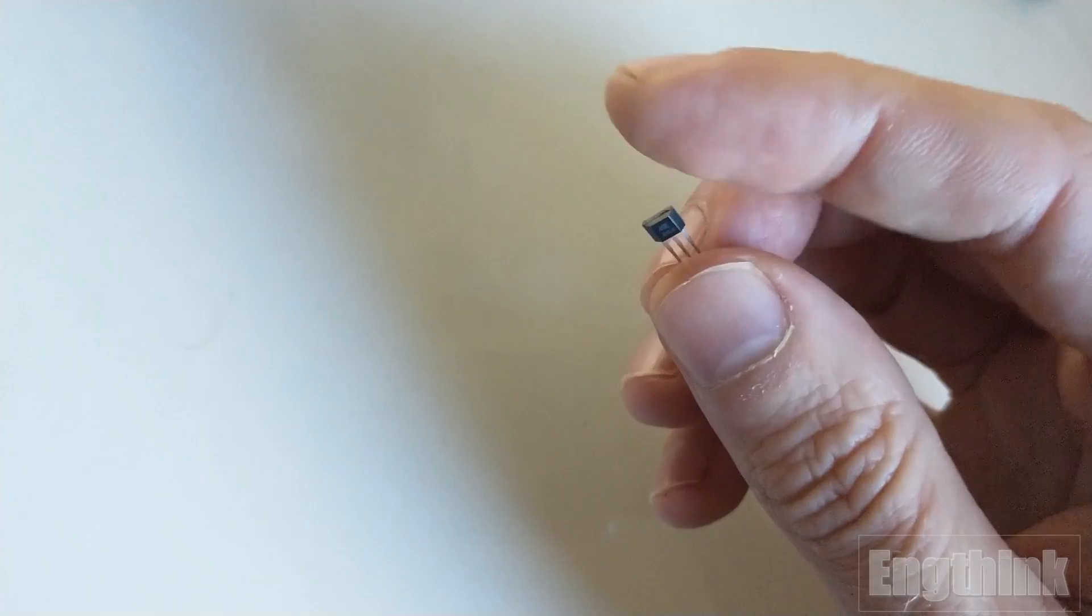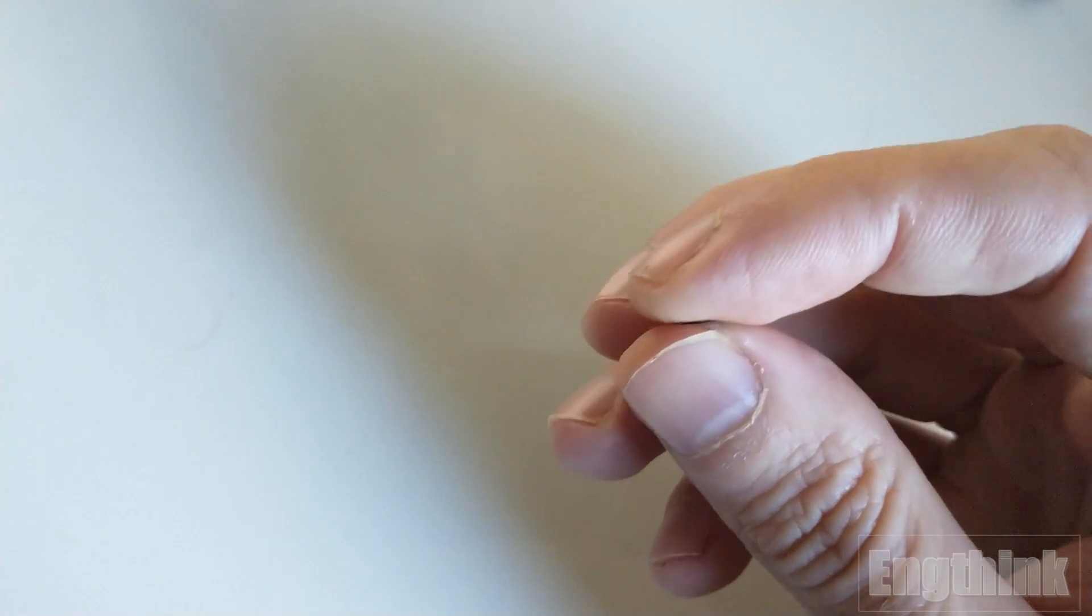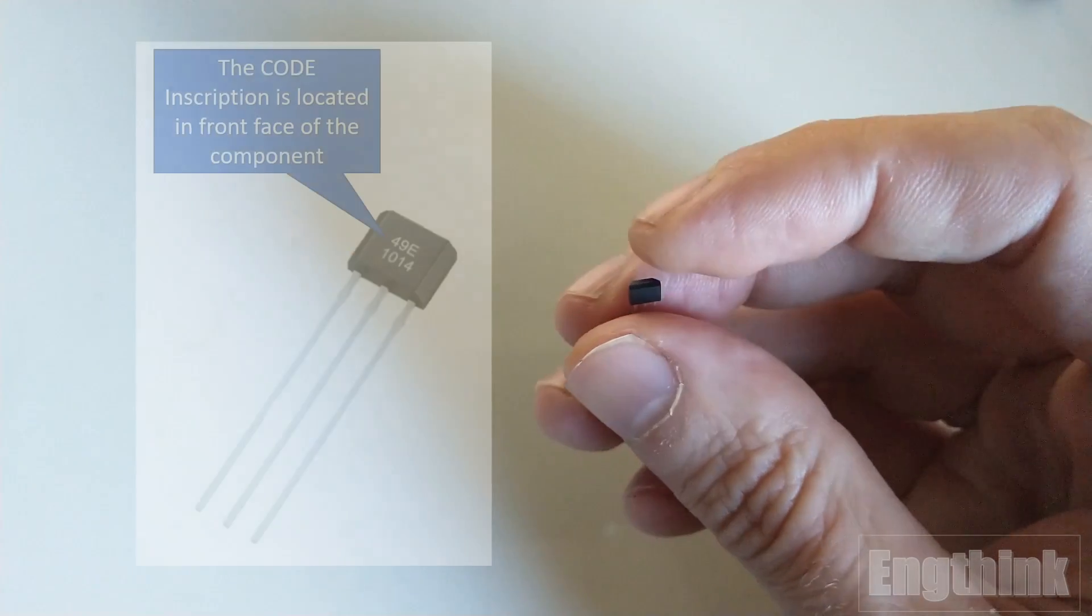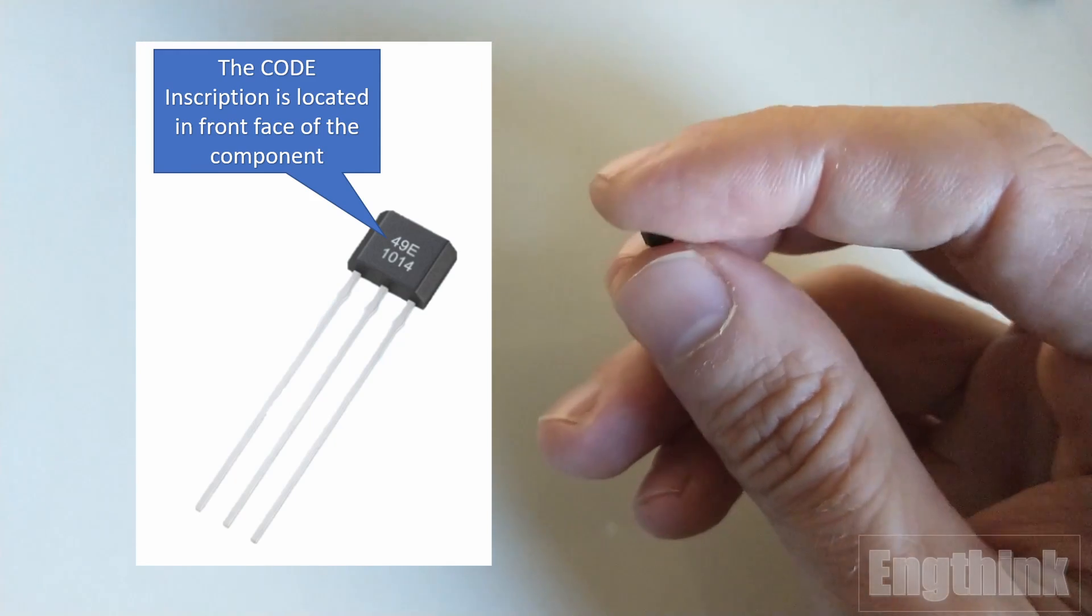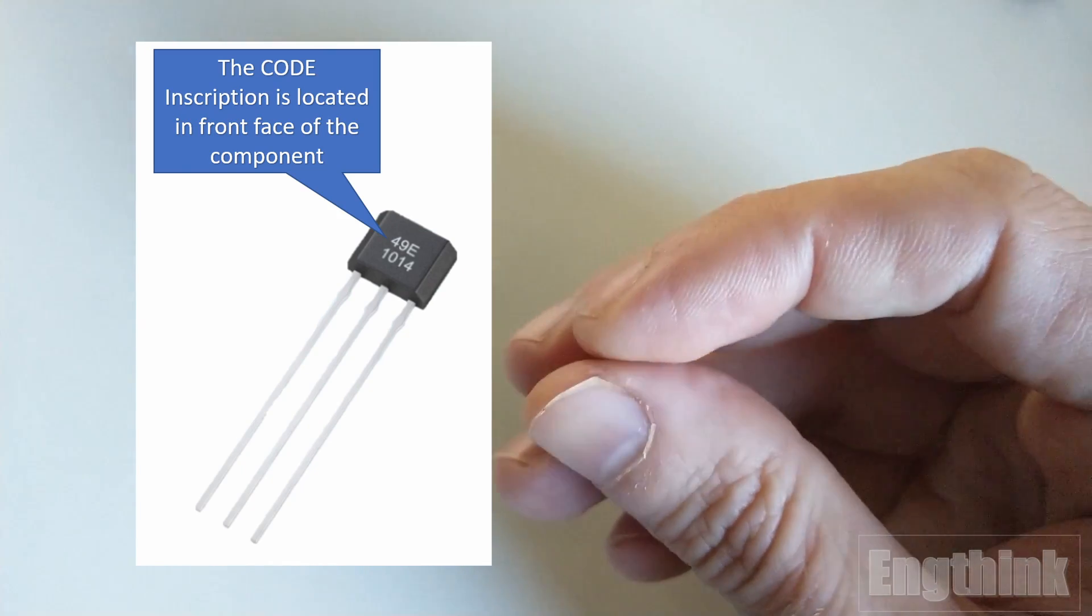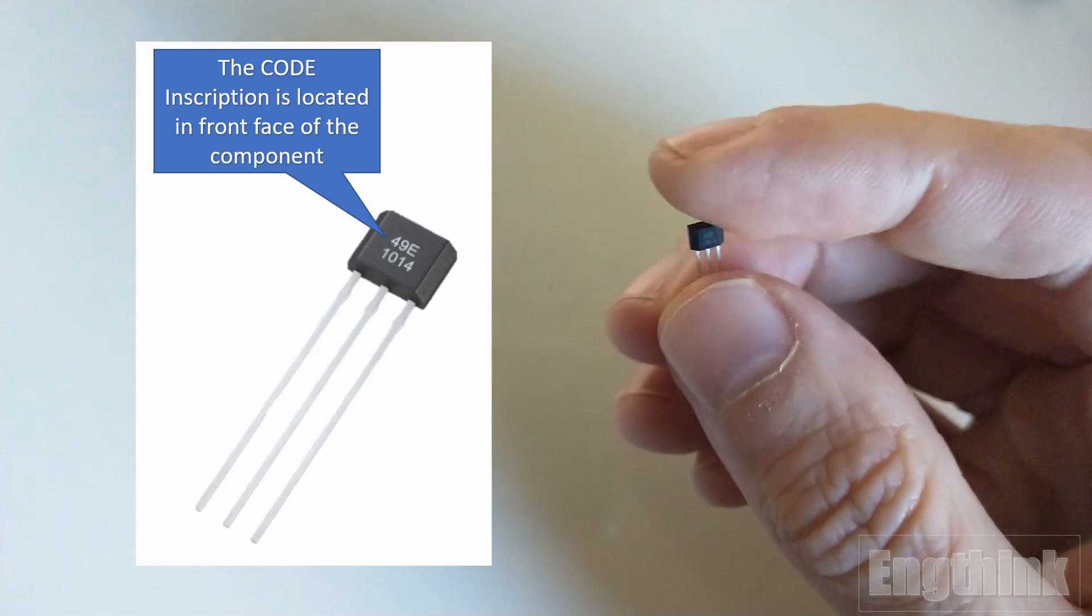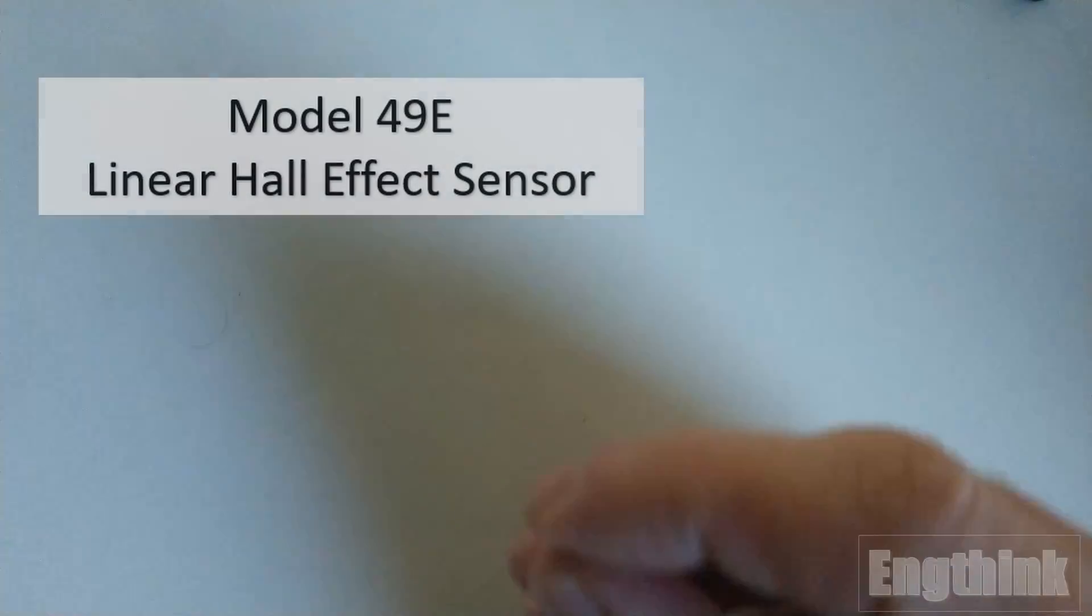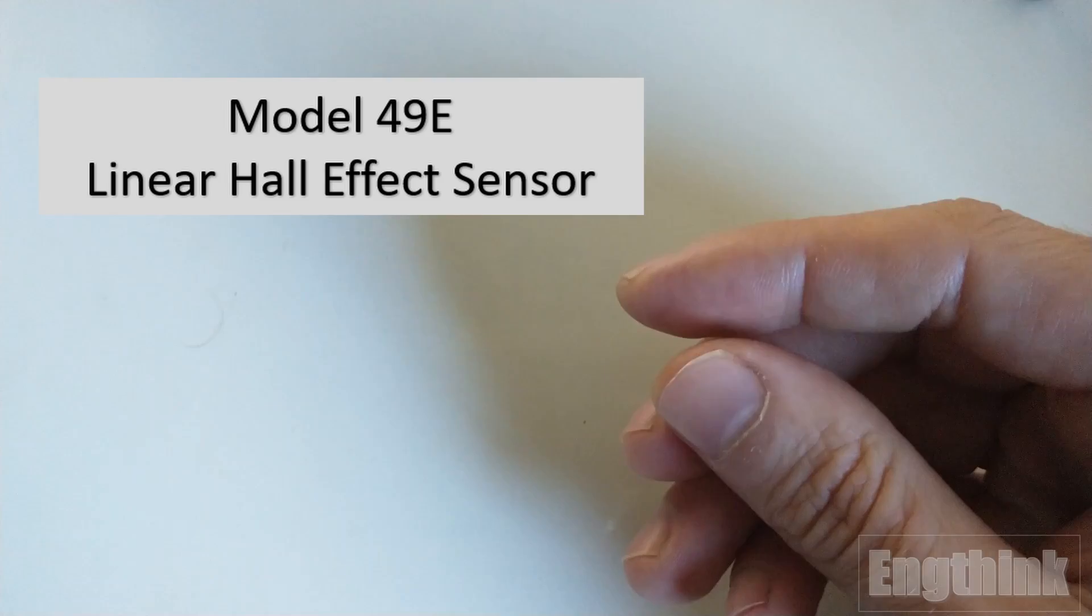In this video, we will test this sensor analyzing the behavior regarding the presence of a magnetic field. The first step before testing is to check the sensor code that is marked in the front or top of the sensor. With the information of the code we can confirm which type of Hall effect sensor we are working with. In this case, as mentioned before, we are using the model 49E. This model can generate an analog output, classifying it as a linear Hall effect sensor.